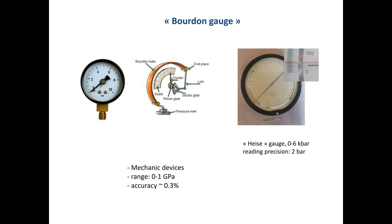There are also big devices of this type — for example the famous Heise gauges, which go to 6 kilobars; some go up to 10 kilobars. They are large — you see here, this is a pen for scale. They are surprisingly accurate because you have a reading precision of two bars, achieved by having a mirror behind the pointer to avoid parallax errors.